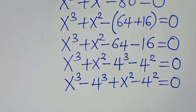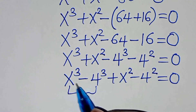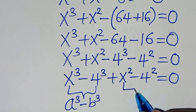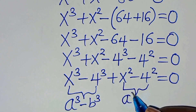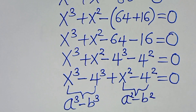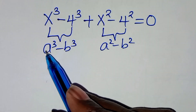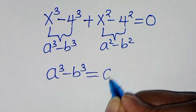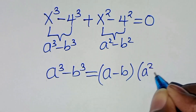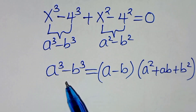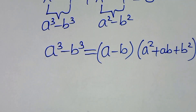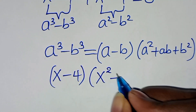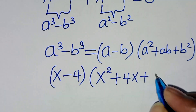The first part is the difference of two cubes, expressed as a cubed minus b cubed. The second part is the difference of two perfect squares, expressed as a squared minus b squared. Applying the difference of cubes identity — a cubed minus b cubed equals (a minus b)(a squared plus ab plus b squared) — we get (x minus 4)(x squared plus 4x plus 16).